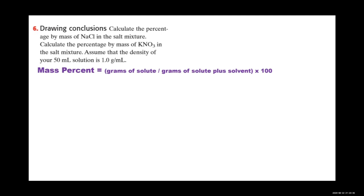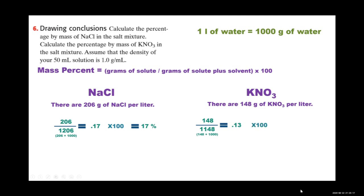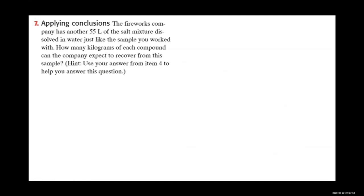To calculate the percentage by mass of each salt in the mixture, use the mass percent formula: grams of solute divided by (grams of solute + grams of solvent) × 100. A liter of water is 1000 grams. For sodium chloride: 206 ÷ (206 + 1000) ≈ 0.17, so approximately 17%. For potassium nitrate: 148 ÷ (148 + 1000) ≈ 0.13, so approximately 13%.